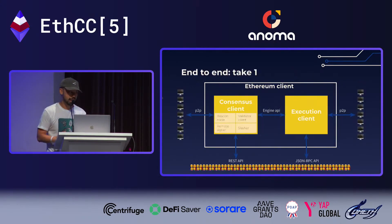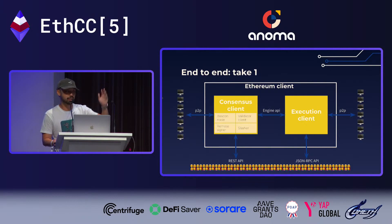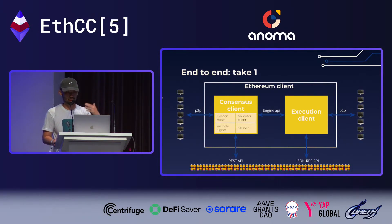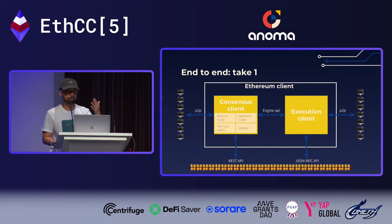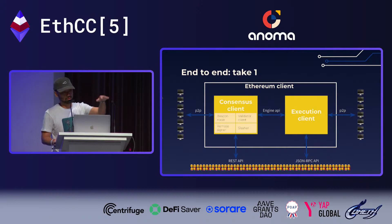Let's tie everything back to the original picture. You have your consensus layer client, your beacon node, your validator client, your remote signer — those are optional — and then you have your execution client. Both have P2P open for gossiping blocks, gossiping attestations, gossiping user transactions. Then you have your user REST API on the bottom where users can query data.